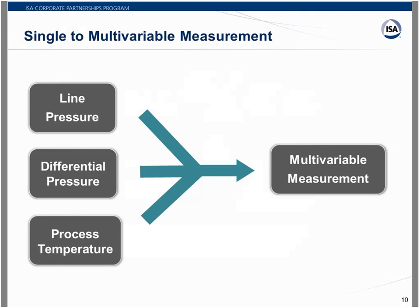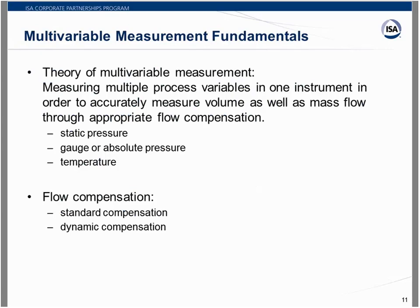Here's what we really want to do with the transmitter: take the line pressure, the differential pressure, and the process temperature, combine them into one unit, and come up with a multivariable measurement where we can do all of these corrections and calculations in one device. Multivariable measurement theory involves measuring multiple process variables in one instrument to accurately measure volume as well as mass flow through appropriate flow compensation.